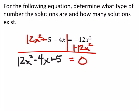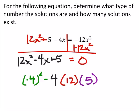So I've got b squared, so that's a negative 4 squared minus 4 times a, which is 12, times c, which is 5. So I end up with 16 minus 4 times 12 is 48. 48 times 5 is 240. I just plugged that into a calculator.